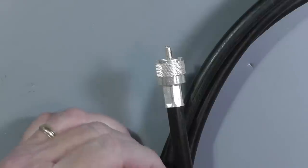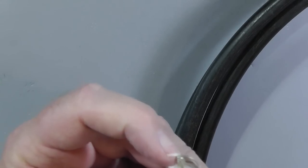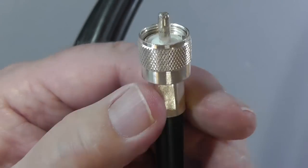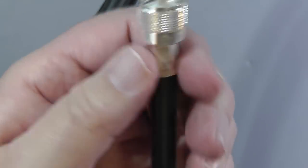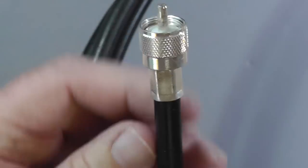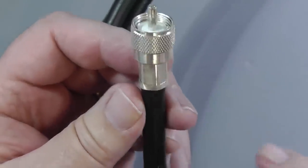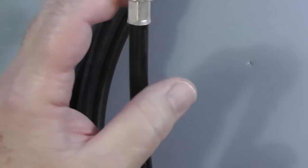This is an example of LMR 400 with a crimp connector on it. And it's soldered there in the center, and then it's crimped on the outer side. Now one of the problems is if you put any stress pulling on this, eventually the plastic will work its way out of there. And that's not a good thing. You don't want to put that on there.